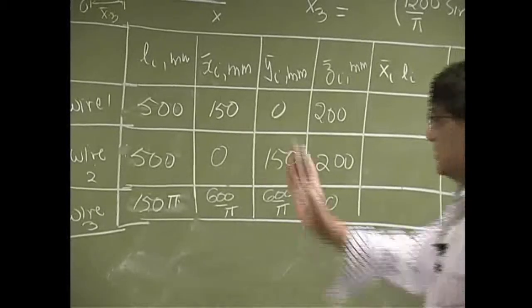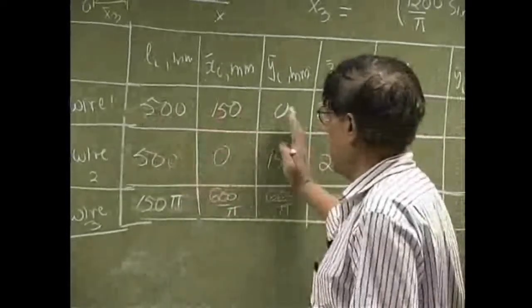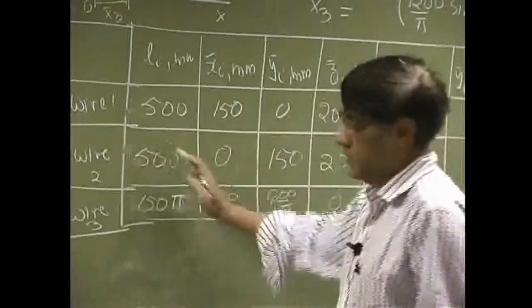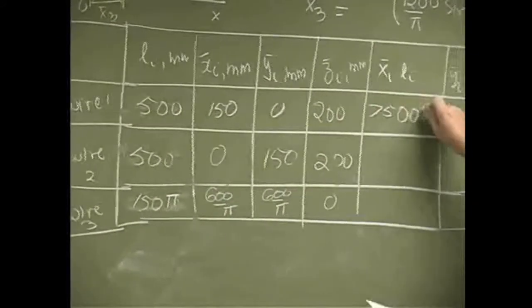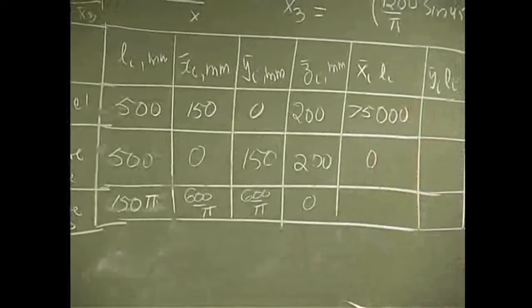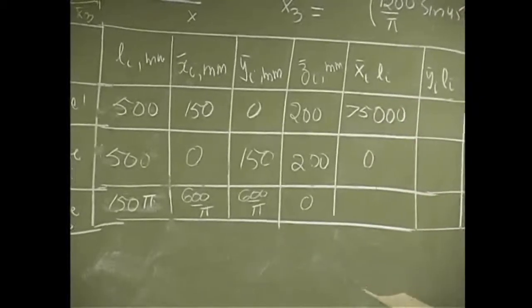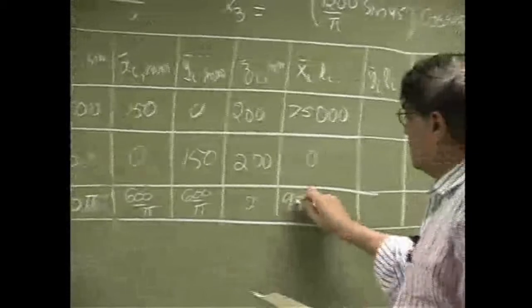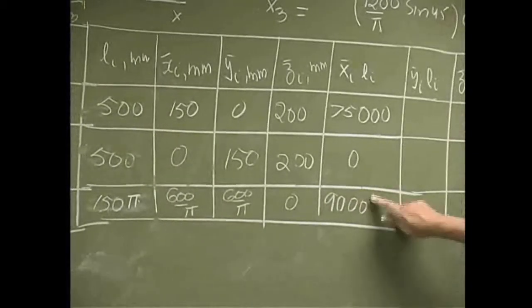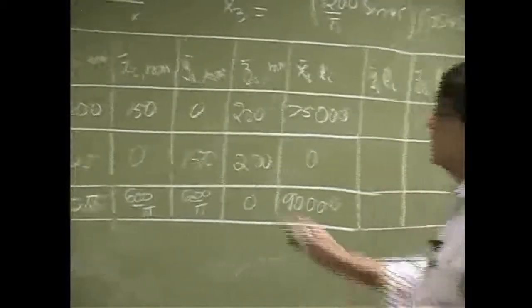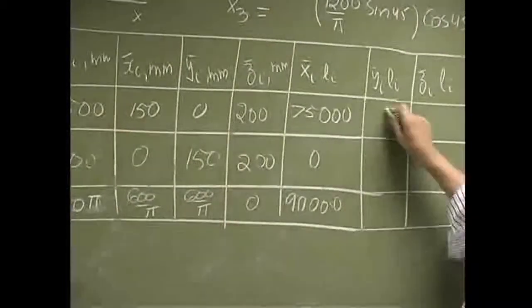Now we do the products: this column with this, this column with this, and this column with this. This is going to come out to be 75,000, 0, and 90,000.